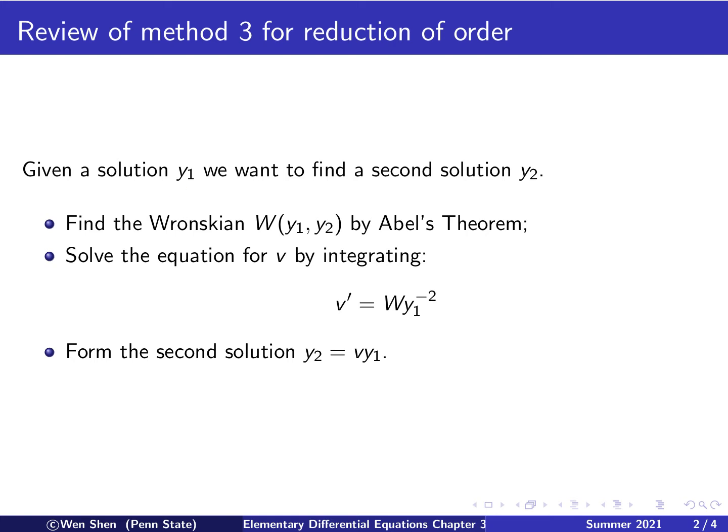Given the solution Y1 of a second order linear homogeneous equation, we want to find a second solution Y2. Here's the procedure. First, we find the Wronskian of the two solutions by Abel's theorem, and then there is an integral of negative P that needs to be performed. Second, we solve an equation for v. We know that v' is W times Y1 to the power negative 2. Now it's a function because both Y1 and the Wronskian are known, and then we find the v by simply integrating this one.